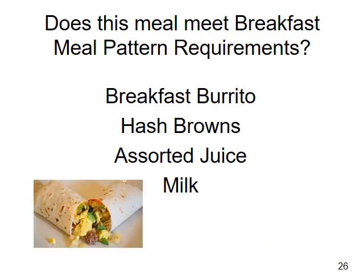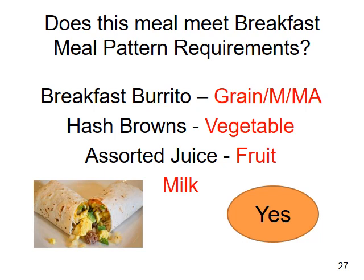This menu includes a breakfast burrito, hash browns, assorted juice, and milk. Does this menu meet meal pattern requirements? Yes — a burrito could meet the grain and meat-meat alternate requirement. I would want to make sure I have a child nutrition label so I know how it credits, and the hash browns credit towards the fruit-vegetable requirement. I would also want to verify how the hash brown credits — whether it's a quarter cup or half cup based on the weight and size — and the assorted juices meet the fruit requirement, along with a carton of milk.